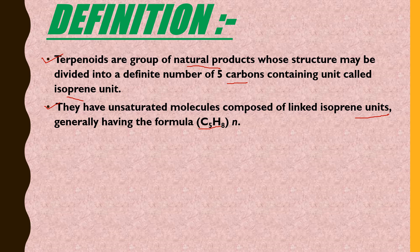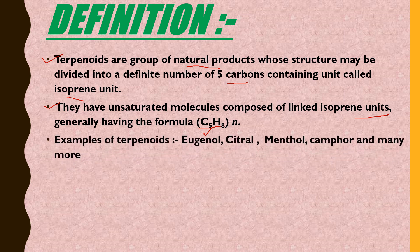The isoprene unit generally has a formula of C5H8, where n is the number of isoprene units. Terpenoids are unsaturated molecules with the general formula (C5H8)n. If n is 2, then it is diterpenes; if 3, then triterpenes; and so on for higher multiples. These are all examples of terpenoids.